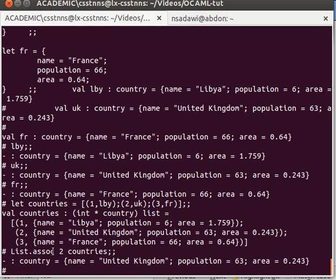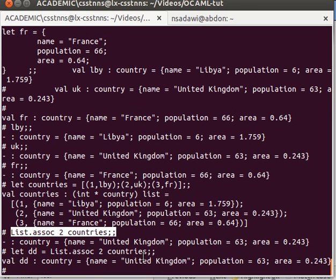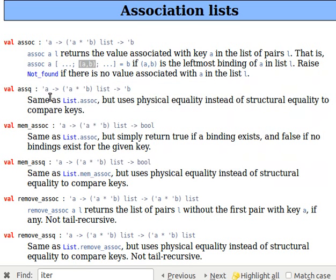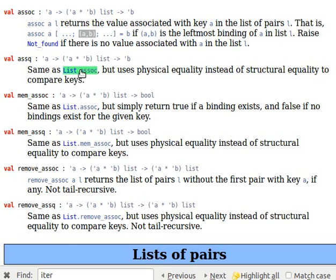As you can see here, I can say let, for example, dd equals that, and that will be a variable of type country, and it will be the record of the United Kingdom. As you can see here, that's a list of pairs, and that's how list association works. These are the functions that you can learn about, just read. I'm sure you will get the idea of how these functions work.